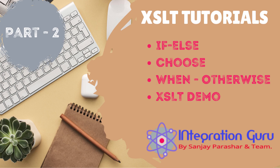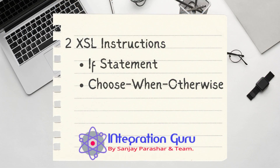Hello everyone, this is Sanjay Parashar, welcome back to the channel. This is going to be the second part of our XSLT tutorial series. In our first part we discussed about creating schema based on XML document, then transforming data from one XML format to another XML format. Today we will learn about implementing conditions within XSLT. There are two ways to achieve conditions in XSLT: one is the if statement, and the second is the choose/when/otherwise statement.